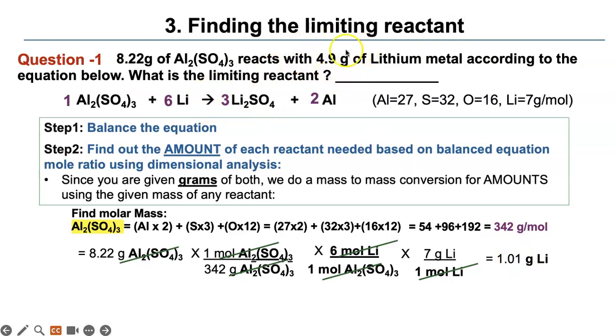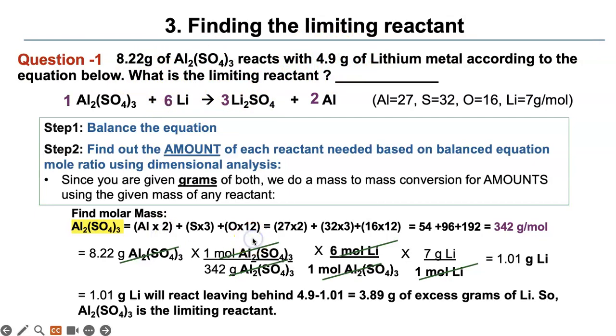This is too much for this much of aluminum sulfate. So who is the excess reactant? This guy. And this guy is the limiting reactant. So you will have 4.9 minus 1.01, which is 3.89 grams of excess lithium at the end. Practice this kind of equations and problems so that you can understand how to find the limiting reactant.